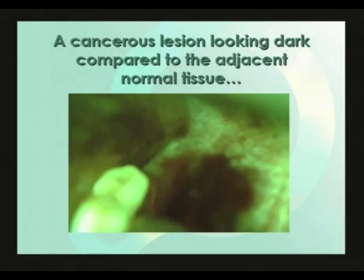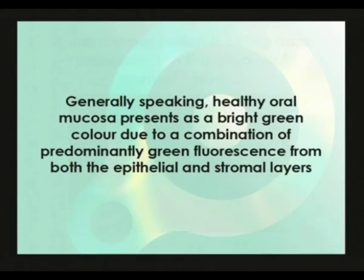The end result is an irregular dark area that stands out against the otherwise normal green fluorescence pattern of surrounding healthy tissue. Now, let's take a look at what a normal, healthy mouth typically looks like in some more detail.